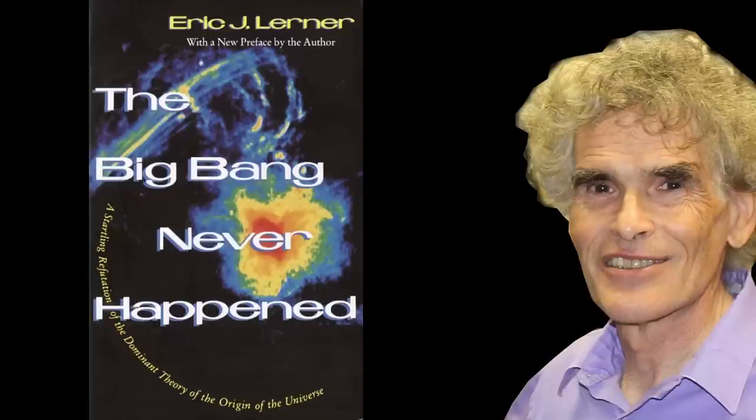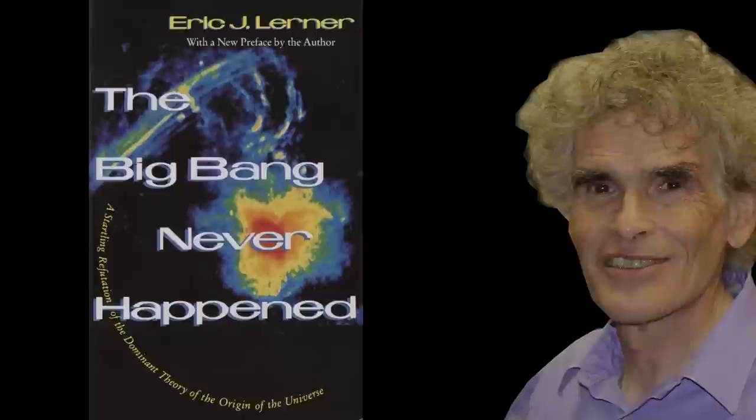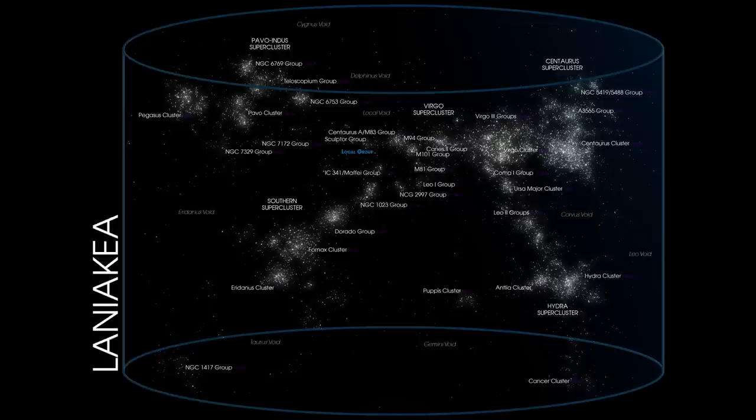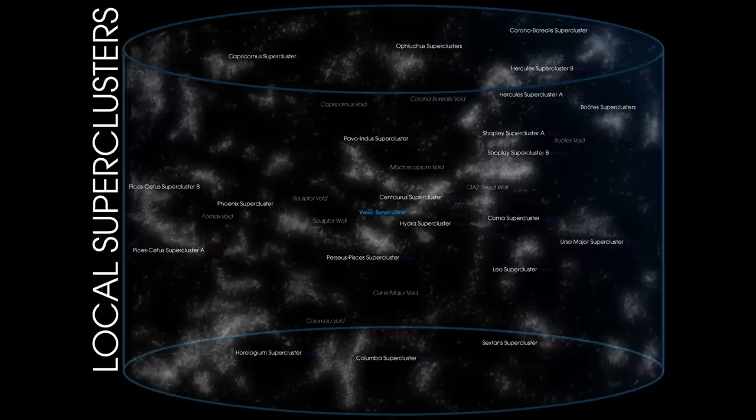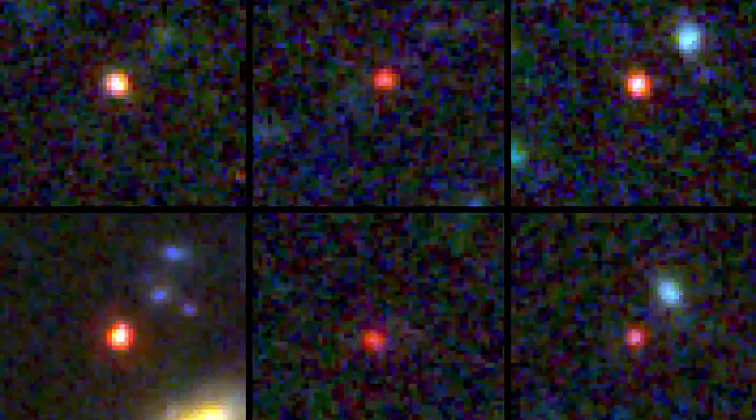Eric Lerner believes in a type of steady state universe. This means that there was no beginning and the universe could be considered infinite. He viewed that light could not travel infinitely but that over time energy was slowly removed causing it to become redshifted. So highly redshifted objects were indeed objects that are further away but that distance does not mean that they are younger.